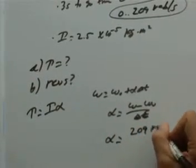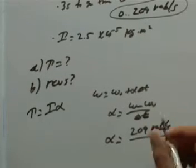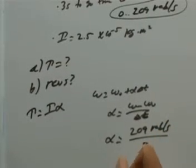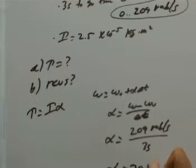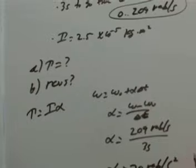So that alpha can pop out pretty easily here. We can just put a 209 radians per second divided by the three seconds. And so the angular acceleration I'd get for this particular CD then would be something like 70 radians per second squared.